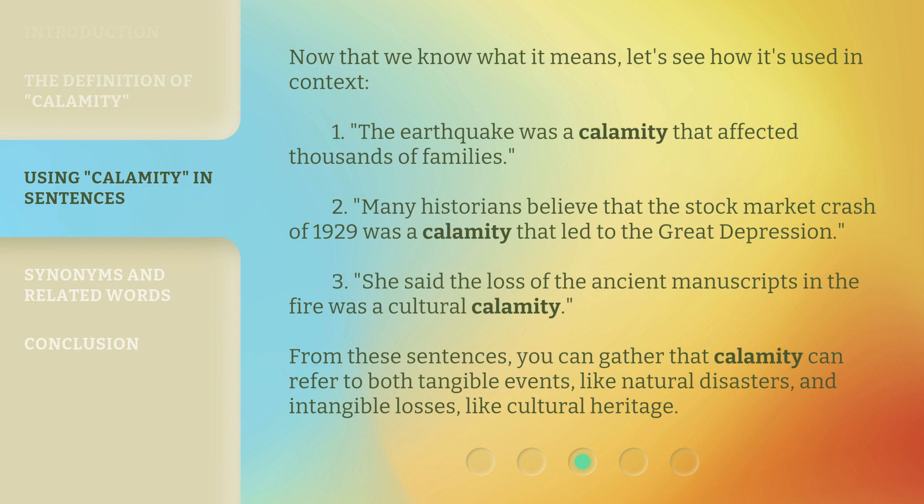Now that we know what it means, let's see how it's used in context. 1. The earthquake was a calamity that affected thousands of families. 2. Many historians believe that the stock market crash of 1929 was a calamity that led to the Great Depression. 3. She said the loss of the ancient manuscripts in the fire was a cultural calamity. From these sentences, you can gather that calamity can refer to both tangible events, like natural disasters, and intangible losses, like cultural heritage.